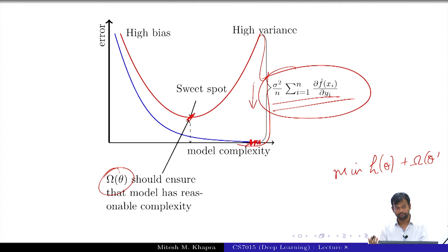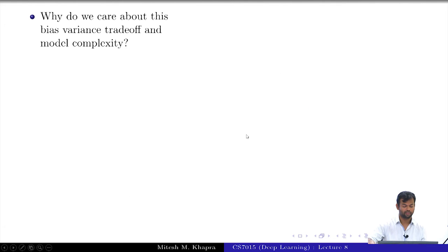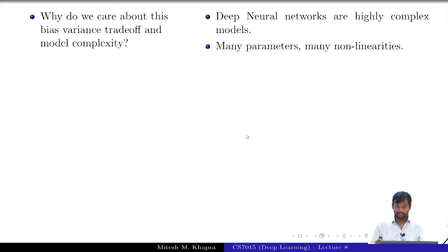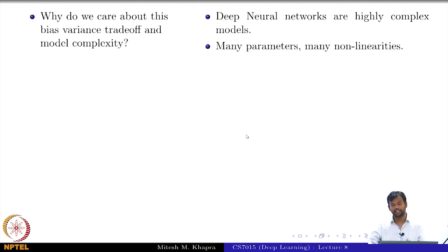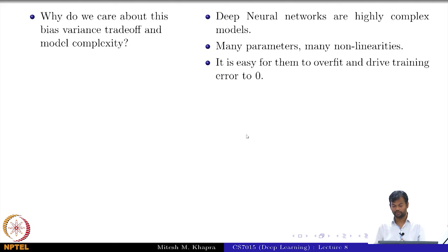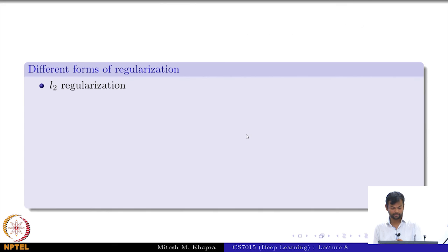But why do we care about bias-variance trade-off and model complexity? This is not just a machine learning course concern. Deep neural networks are highly complex models with many parameters and many non-linearities. Recall the universal approximation theorem — given any data, a deep neural network can exactly overfit it. That is exactly what we want to avoid. That is why regularization is important in the context of deep neural networks. It is very easy for them to overfit the data and drive the training error to zero, which is why we need regularization.